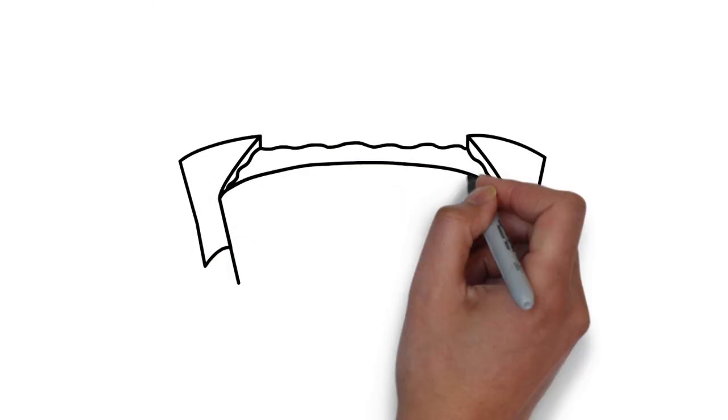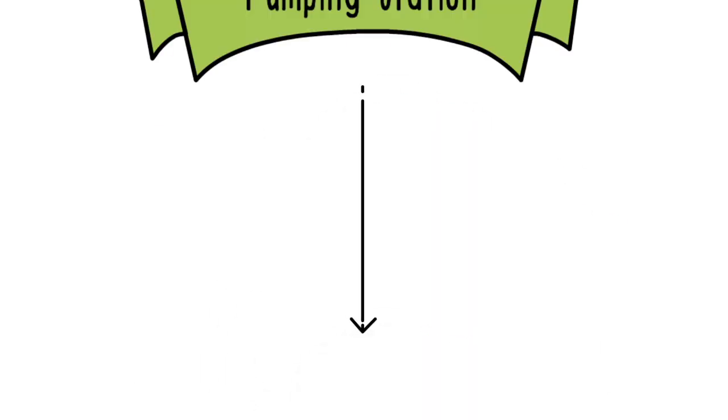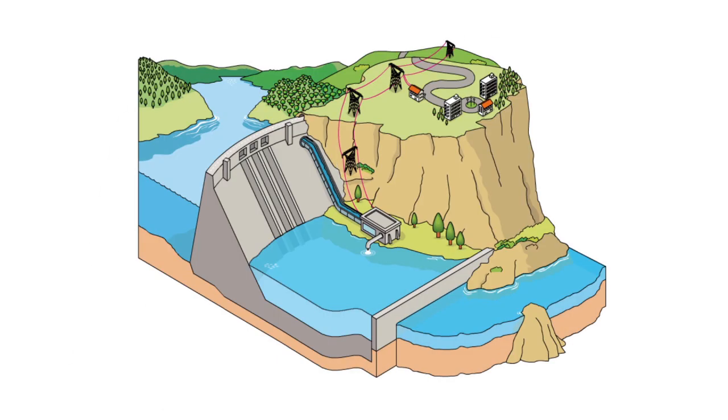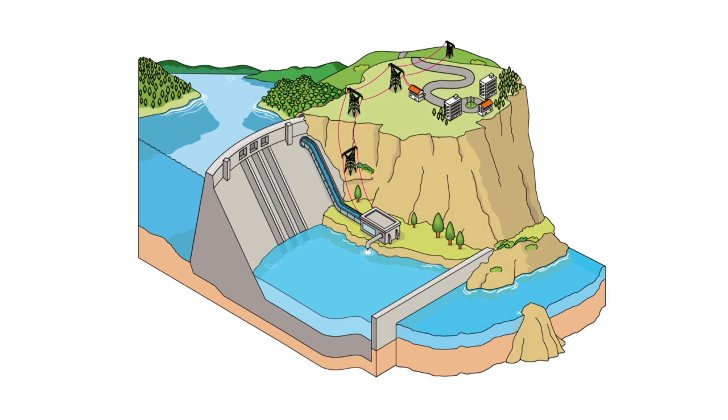There are also pumping stations, which consume energy to raise the water to a higher reservoir in off-peak hours, to release it when electricity consumption is high.